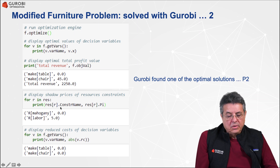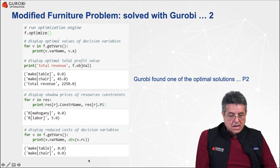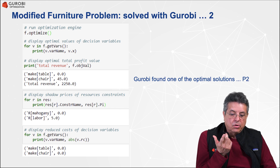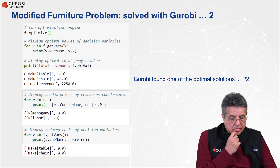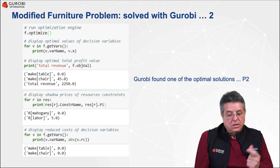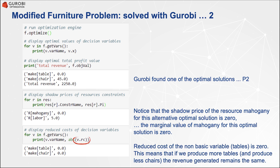Looking at the shadow prices, the shadow price associated with labor is $5 and the shadow price associated with mahogany is $0. The reduced cost of tables, which is the non-basic variable, is $0. At this point we don't know we have multiple optimal solutions, but the zero reduced cost on the non-basic variable 'tables' is telling us something important.